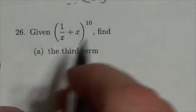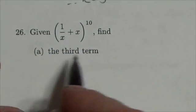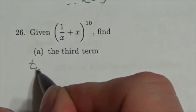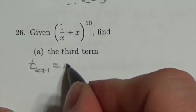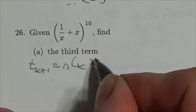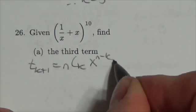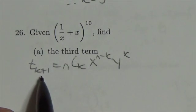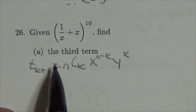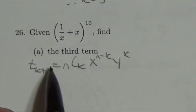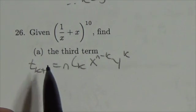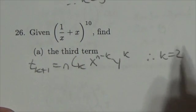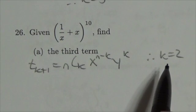I'm going to build the general form of this, because when I'm asking for the third term, remember that the general form looks like this: t sub k+1 is equal to n choose k, first term to the n minus k, second term to the k. Now because it's t sub k+1 and I'm looking for the third term, that makes this equal to three, so k must be two. Therefore in this case, k is equal to two, and that's really what I need to complete this.